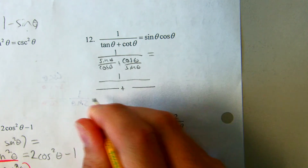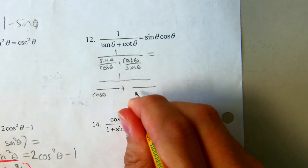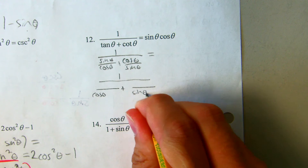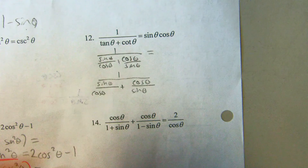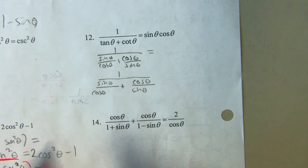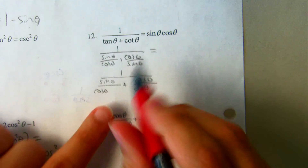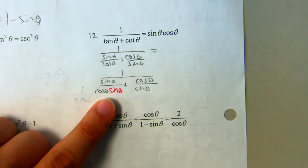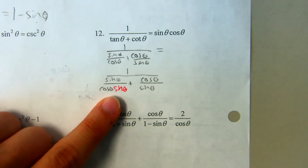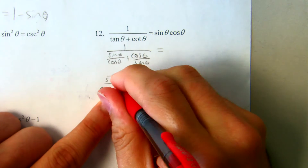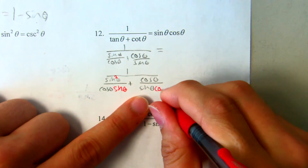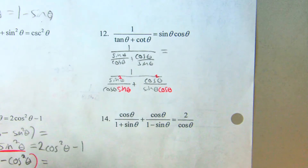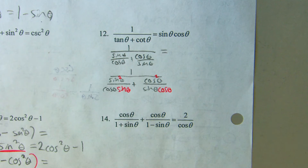And to add fractions, I need a common denominator. So between a denominator of cosine and sine, the common denominator would be sine times cosine. So it looks like the left denominator needs a sine multiplied, so the numerator needs to be multiplied by sine — keep it balanced. The right denominator needs to be multiplied by cosine, so the numerator needs to be multiplied by cosine.